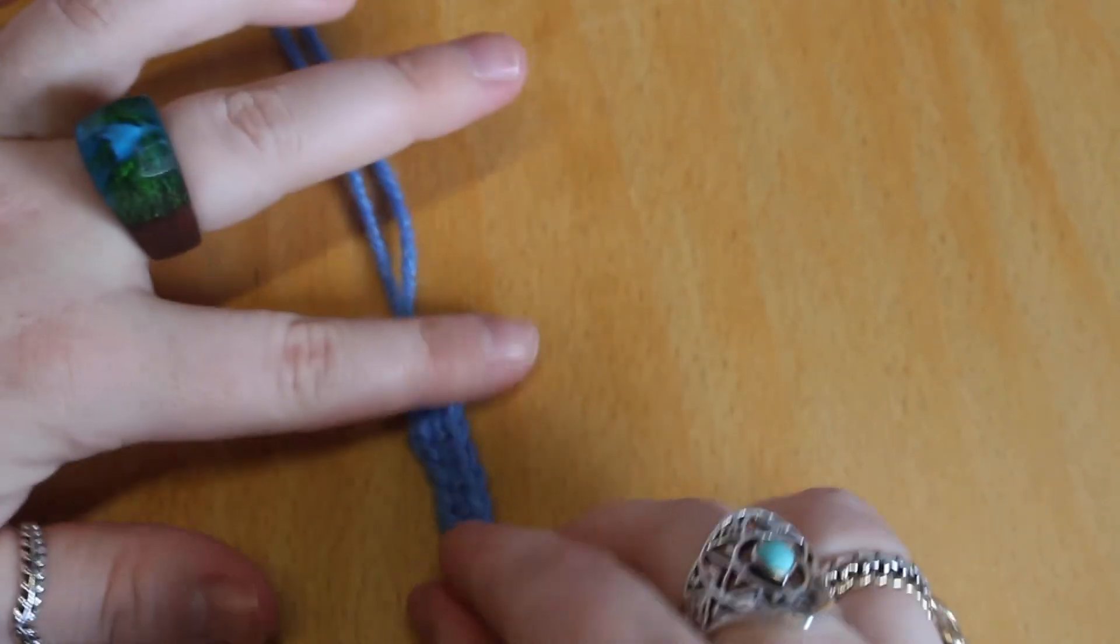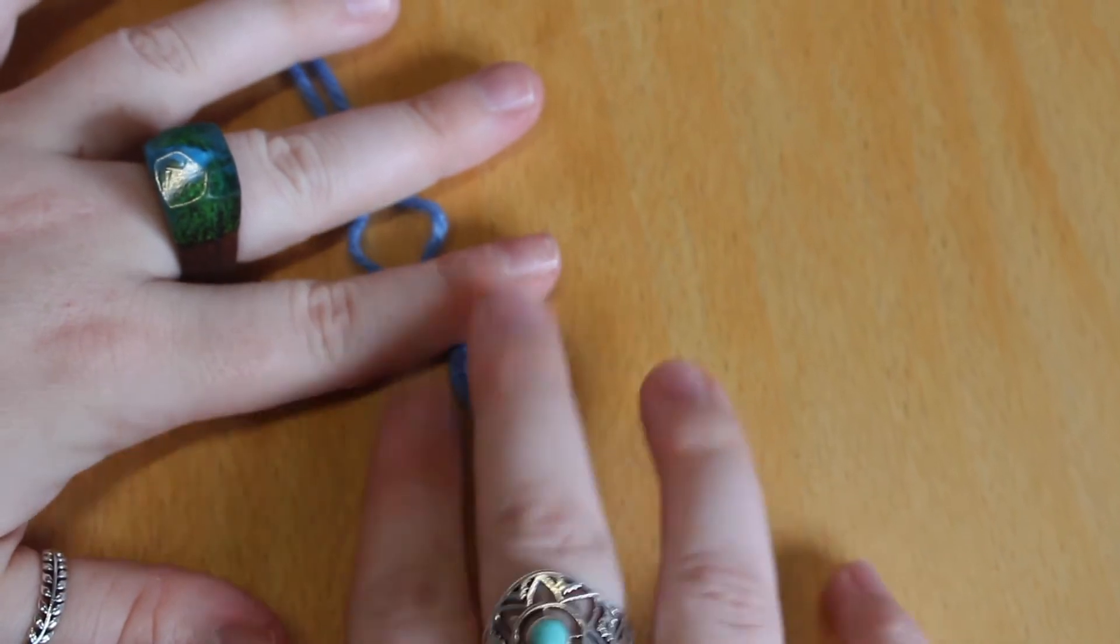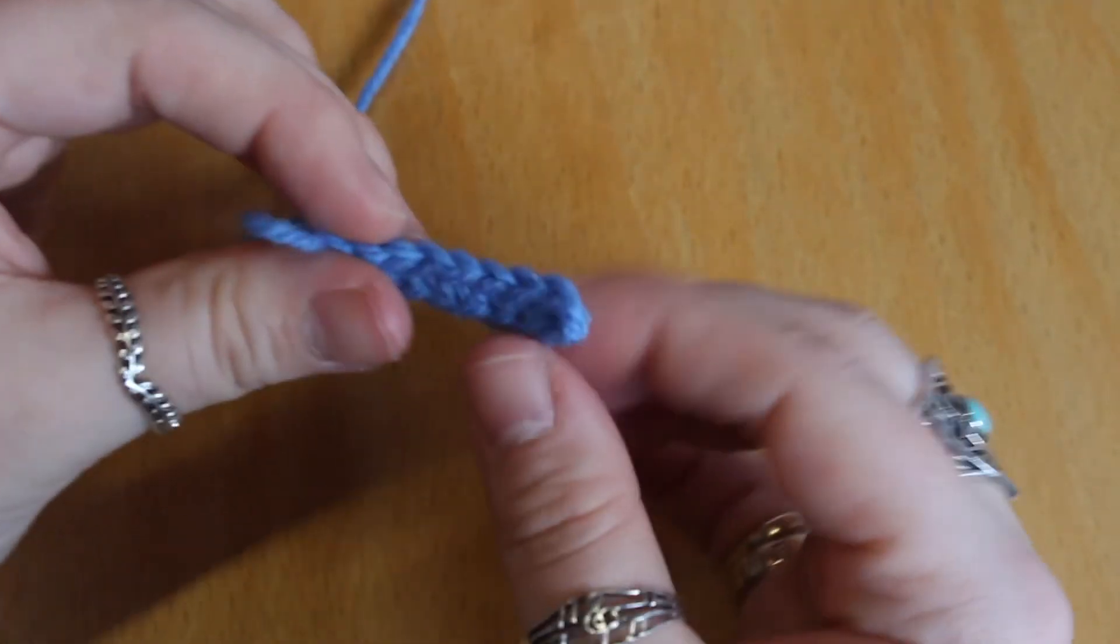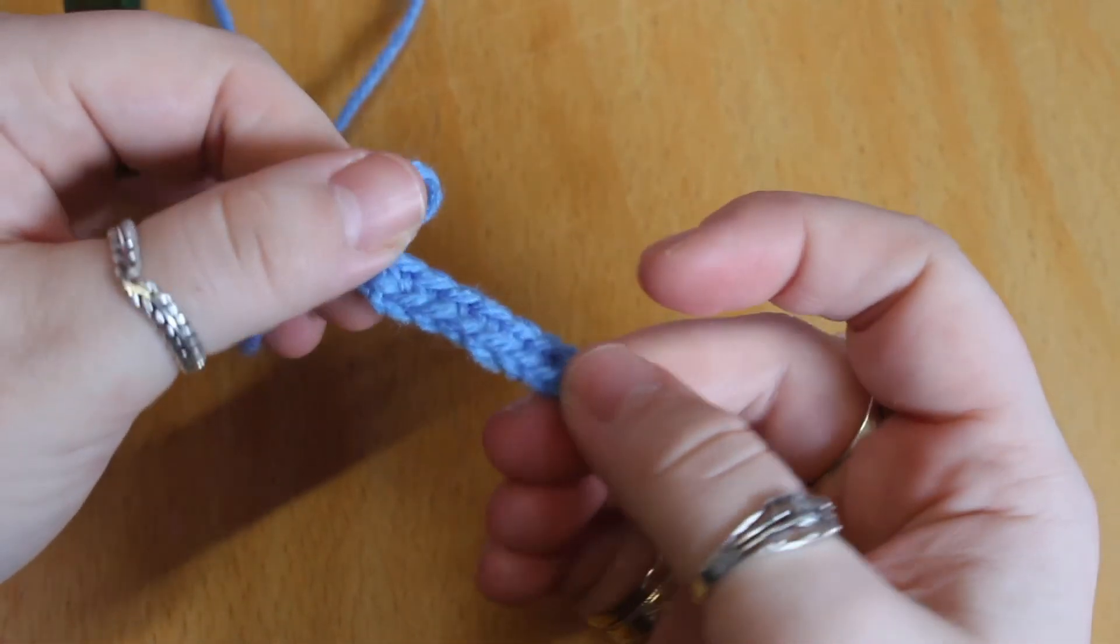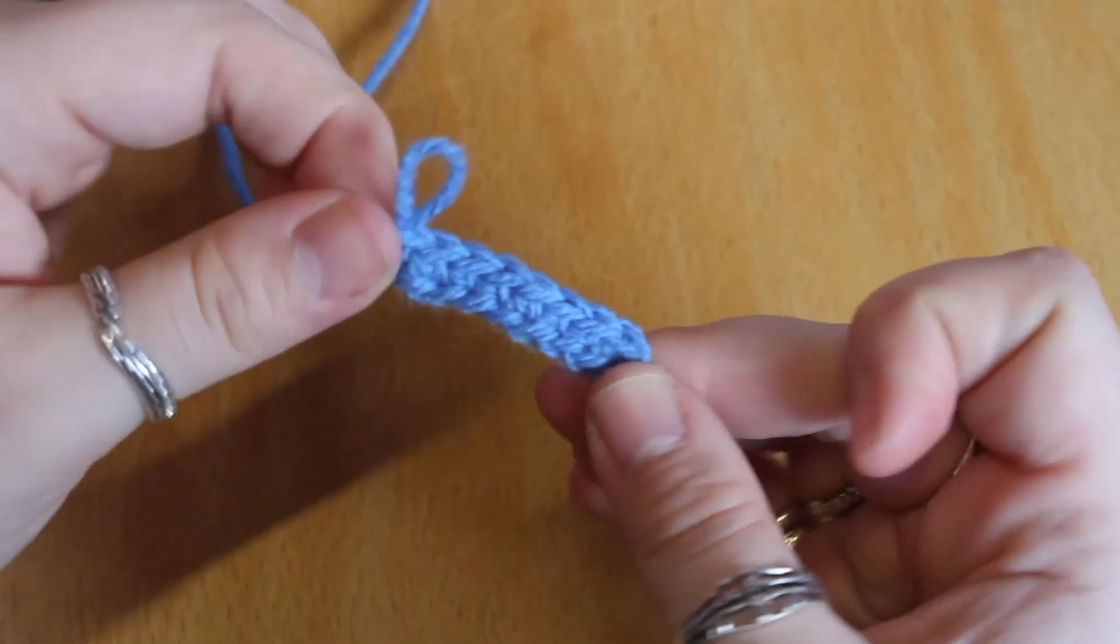Just a quick note though, if you're trying to make a curl in toy making for hair or for other design choices this method is not helpful and you'll want to stick to crocheting into the front part of the stitch to achieve that look.